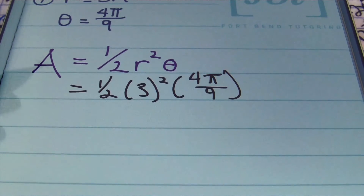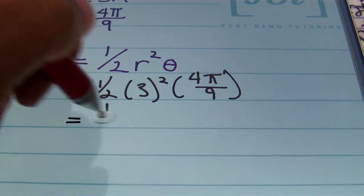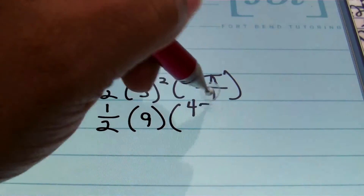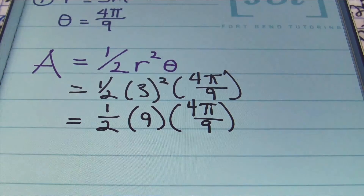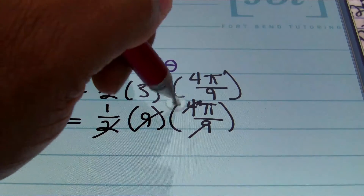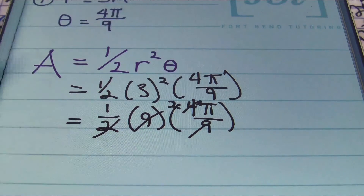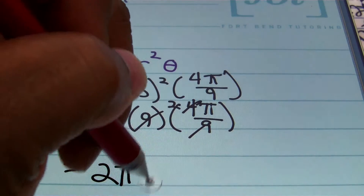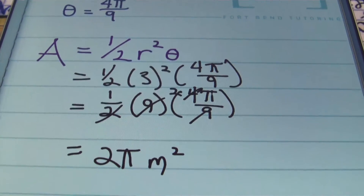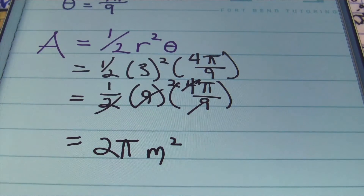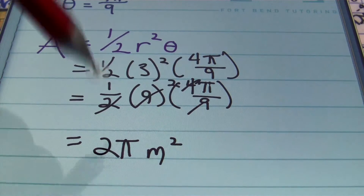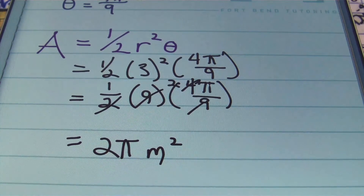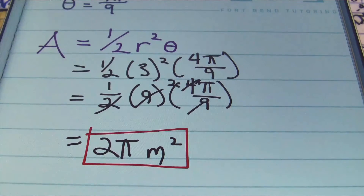Now I'll simplify using the order of operations. I have one-half times 9 times 4π all over 9. The nines cancel out, and I can simplify the 2 into 4 — 2 goes into itself once and into 4 twice. Multiplying everything out, you end up with an answer of 2π meters squared. Remember, when dealing with area, your unit of measurement is always to the second power. If they ask for an exact answer, this is it.